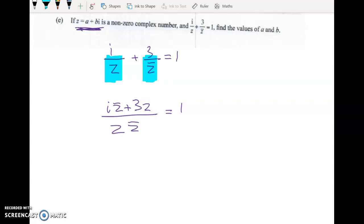Now cleaning up the fraction we get i times z bar which we'll pop in now as a minus bi plus 3 times a plus bi is equal to z times z bar.